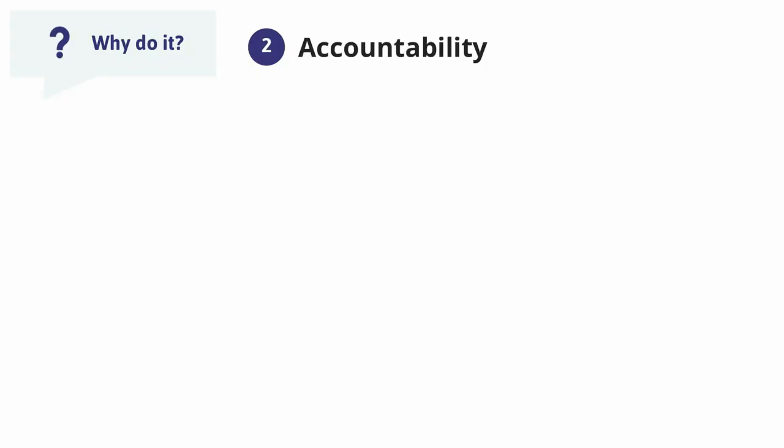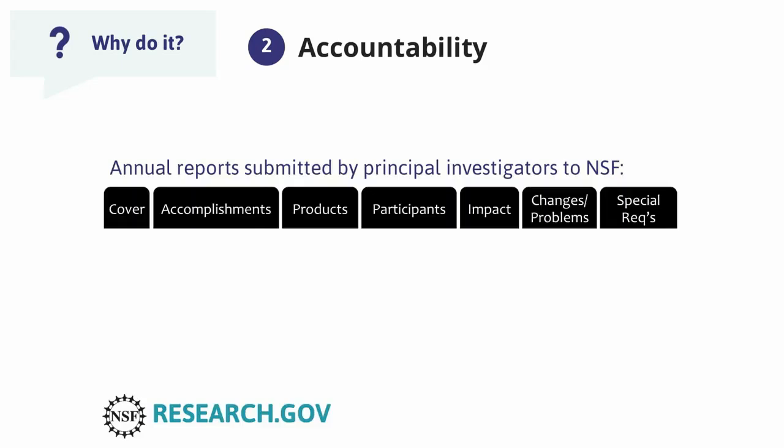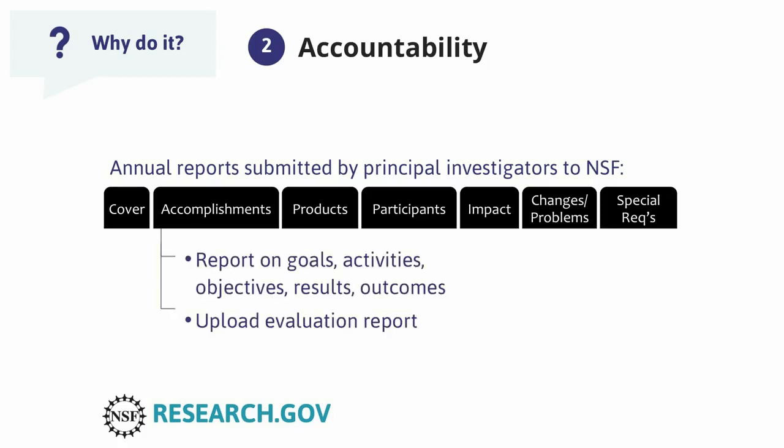Now let's consider accountability. At the most basic level, evaluation enables a high degree of accountability. Individual grants are held accountable for their use of federal resources, and the information helps NSF be accountable to Congress and justify continued support for the program. Projects funded by NSF must submit reports annually through an online system called research.gov. In the accomplishments section, grantees report on project goals, activities, objectives, results, and outcomes. Evidence of project results comes largely from the evaluation, and this is also where grantees upload their evaluation reports for NSF program officers to review.